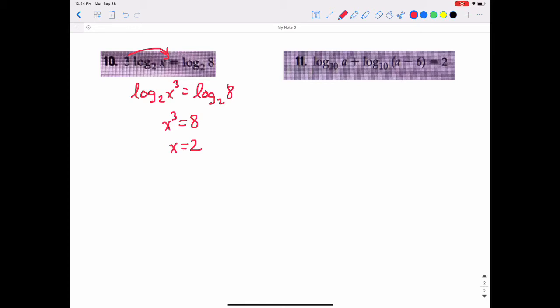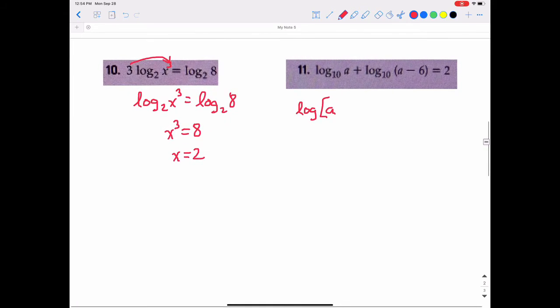And then the last one, this is log base 10 of a plus log base 10 of a minus 6 equals 2. So how can we combine those into a single log? It's kind of funny they put the base 10 and wrote down a base 10 on this one. Because remember that even if we don't have a base written down, it's automatically base 10. So that would be the log of a times a minus 6, log base 10 equals 2.